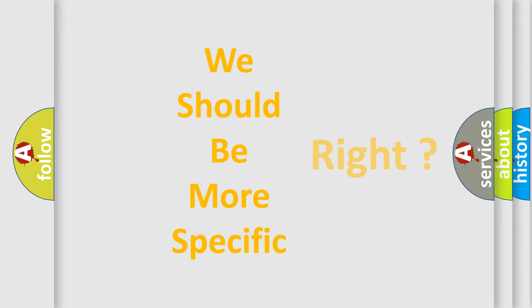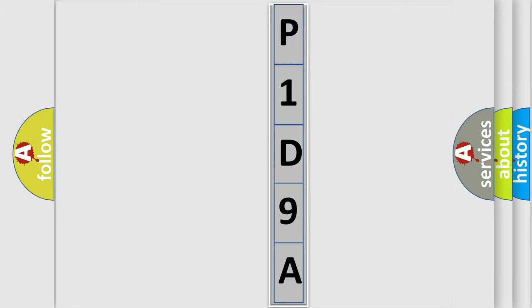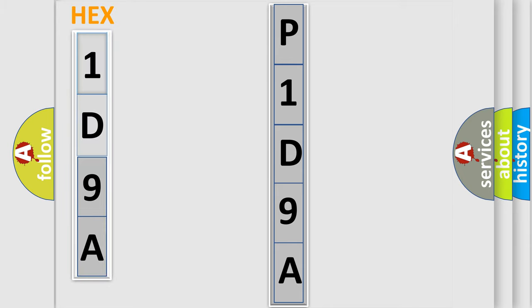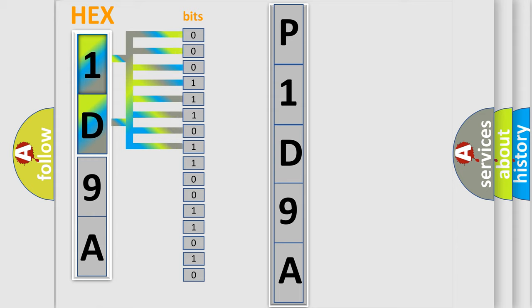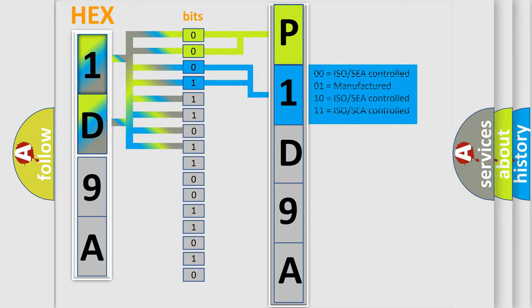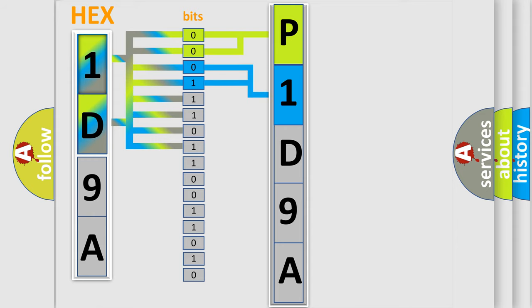The following demonstration will help you look into the world of software for car control units. The error code is split into two bytes consisting of 16 bits. One bit is the basic unit that each computer works with. The bit has two logical states: zero, low level, and one, high level. By combining the first two bits, the basic character of the error code is expressed. The next two bits determine the second character. The last bits of the first byte define the third character of the code.